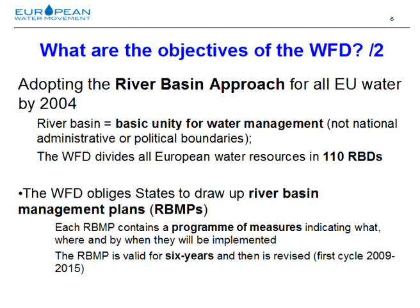The second objective is to adopt the river basin approach for all European waters, which means adopting the natural river basin as the basic unit for water management, no matter where it stands or what country it belongs to. The Water Framework Directive divides all European waters into 110 river basin districts, and for each of them the states need to prepare a river basin management plan — a six-year long management plan that needs to be re-edited every six years.